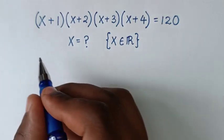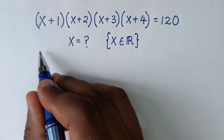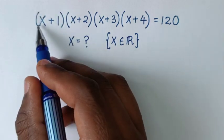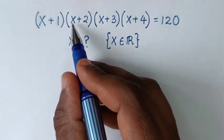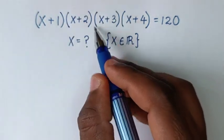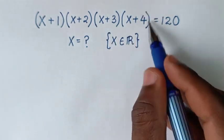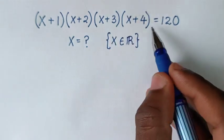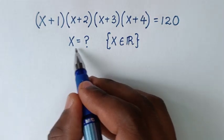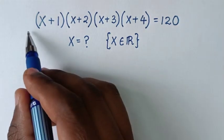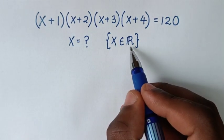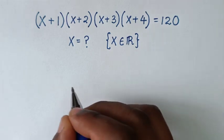Hello, you are welcome to solve this math problem, which is (x+1)(x+2)(x+3)(x+4) = 120. To find the values of x from this math problem, set that x is element of a real number.